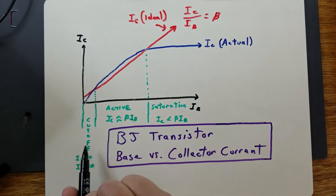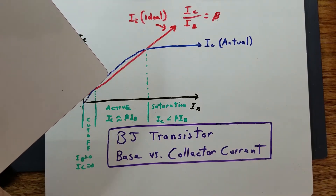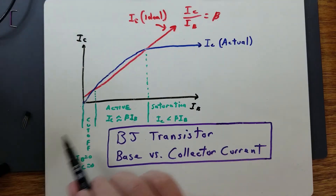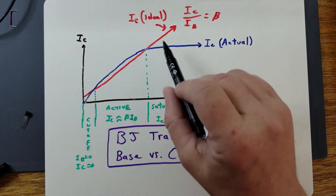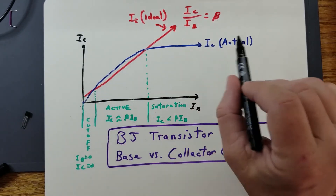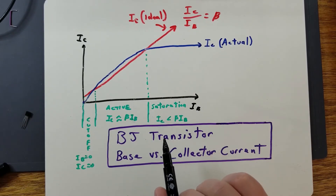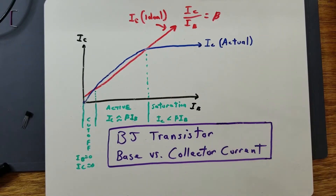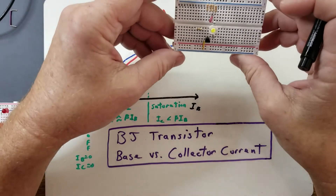In cutoff, the voltage across the transistor is approximately equal to the supply voltage because it is essentially an open circuit. That is the graphical representation of the ideal versus actual response in terms of collector current versus base current for a bipolar junction transistor.